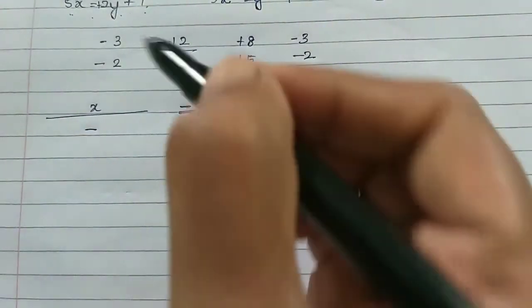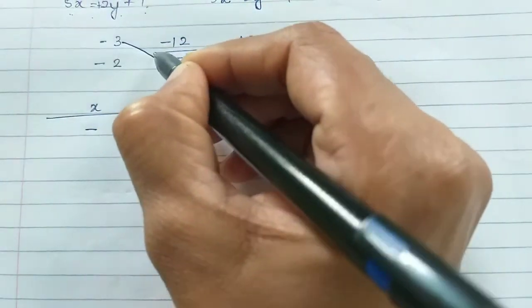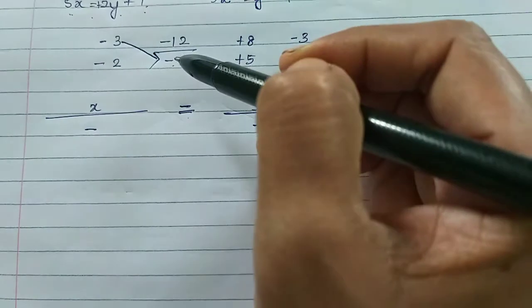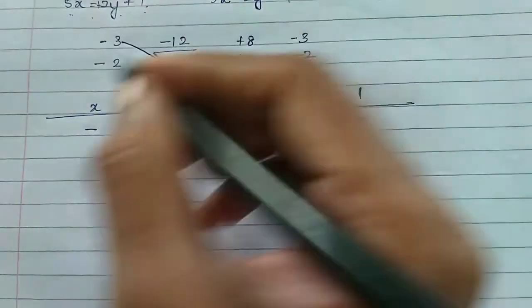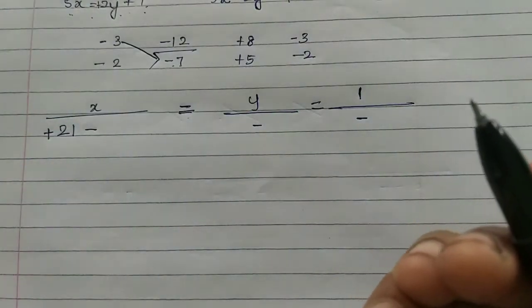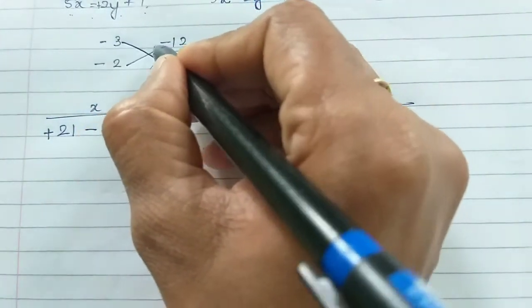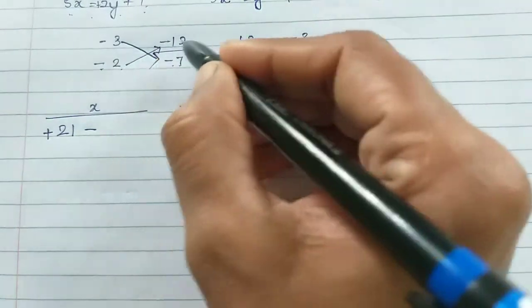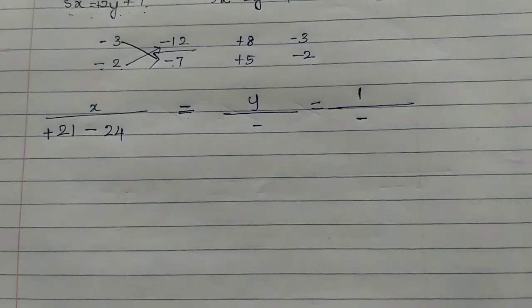Now computing: minus x minus plus, then plus symbol. 3 sevens are 21. Then minus 2 into minus 12: minus into minus is plus, so 2 into 12 is 24.